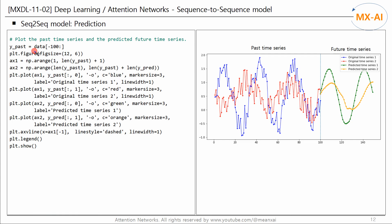Finally, let's plot the last 100 data points of our time series and the 50 predicted future values. The past time series and the predicted future time series are shown: the blue and red are the observed past time series, and the green and orange are the predicted future time series. You can see that two sine curves with different frequencies are predicted.